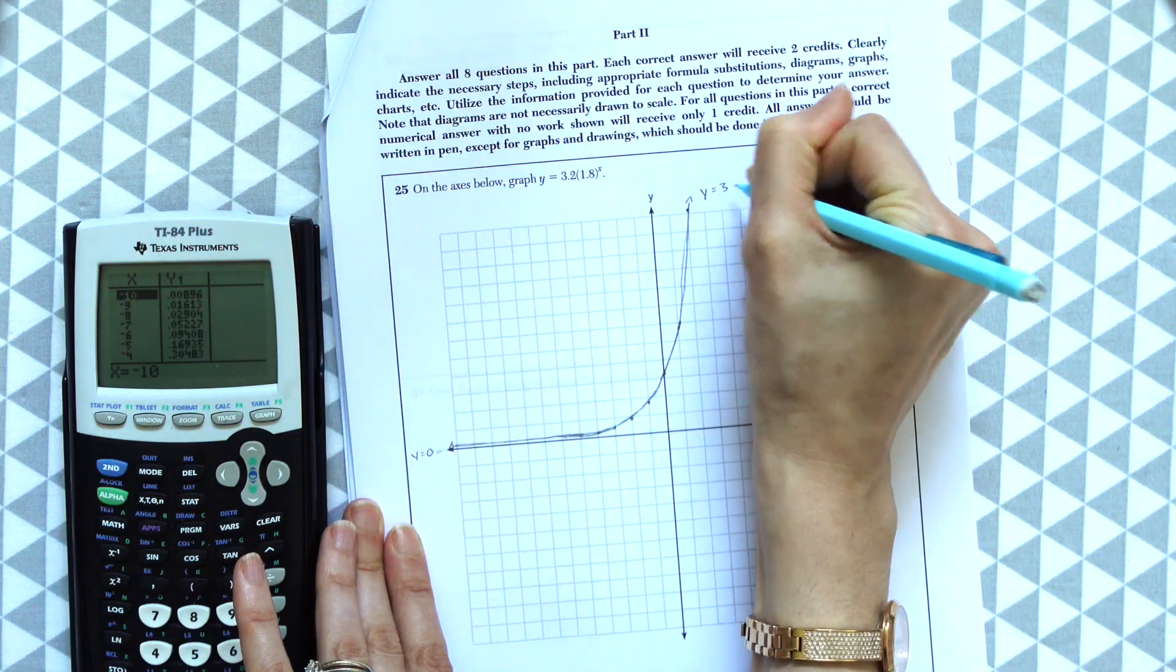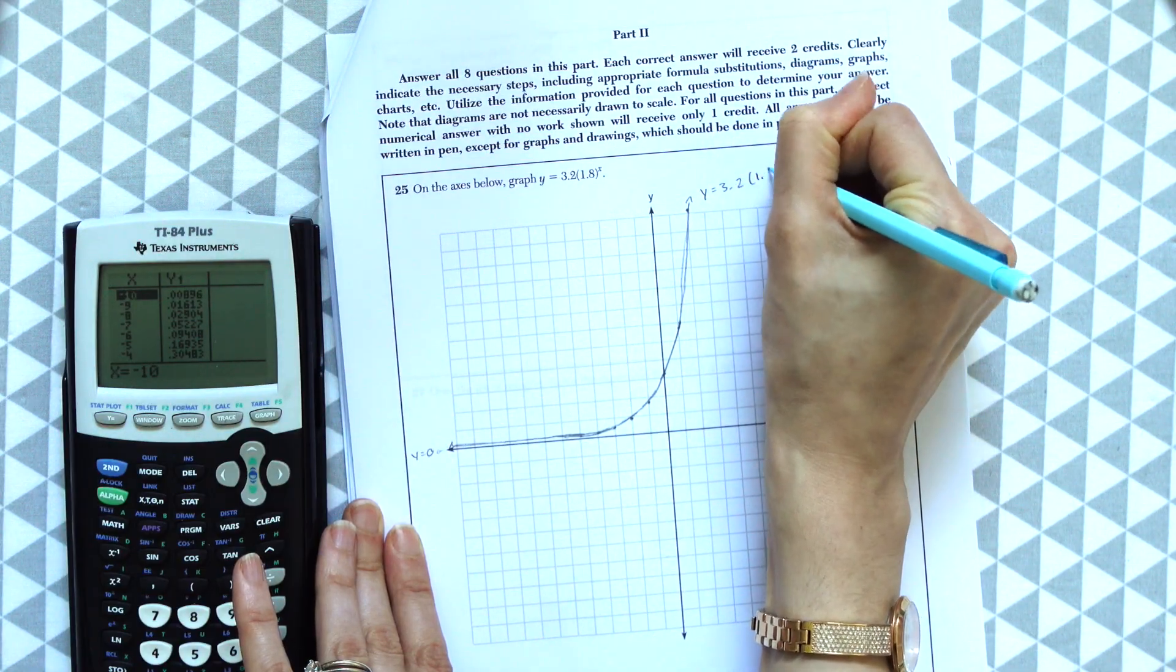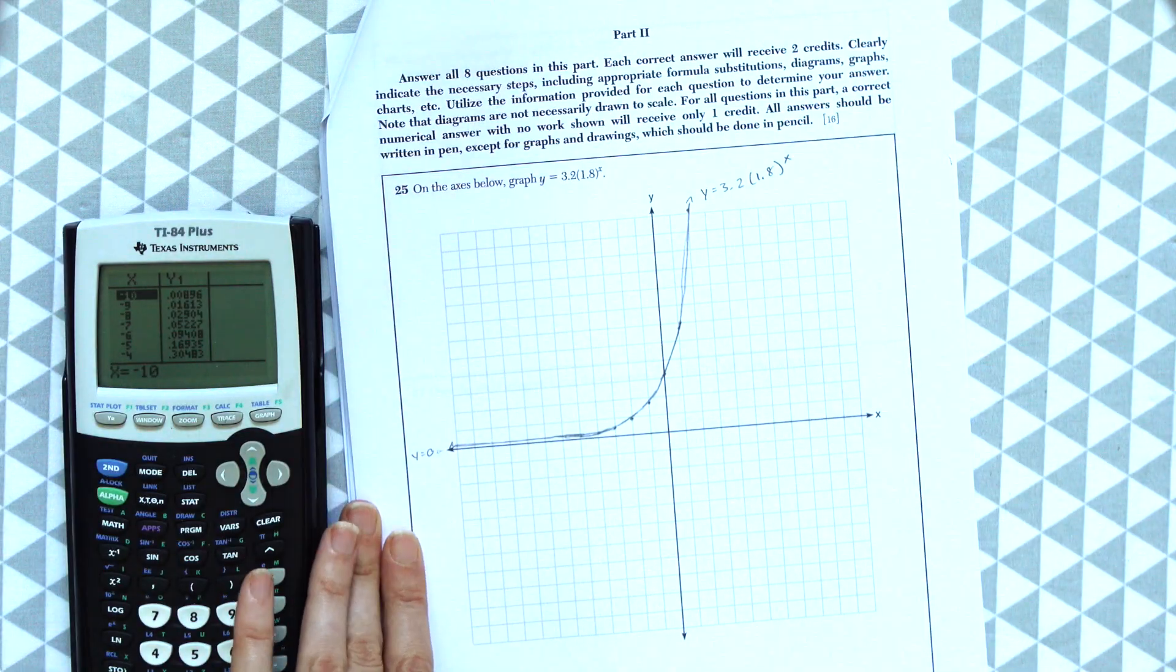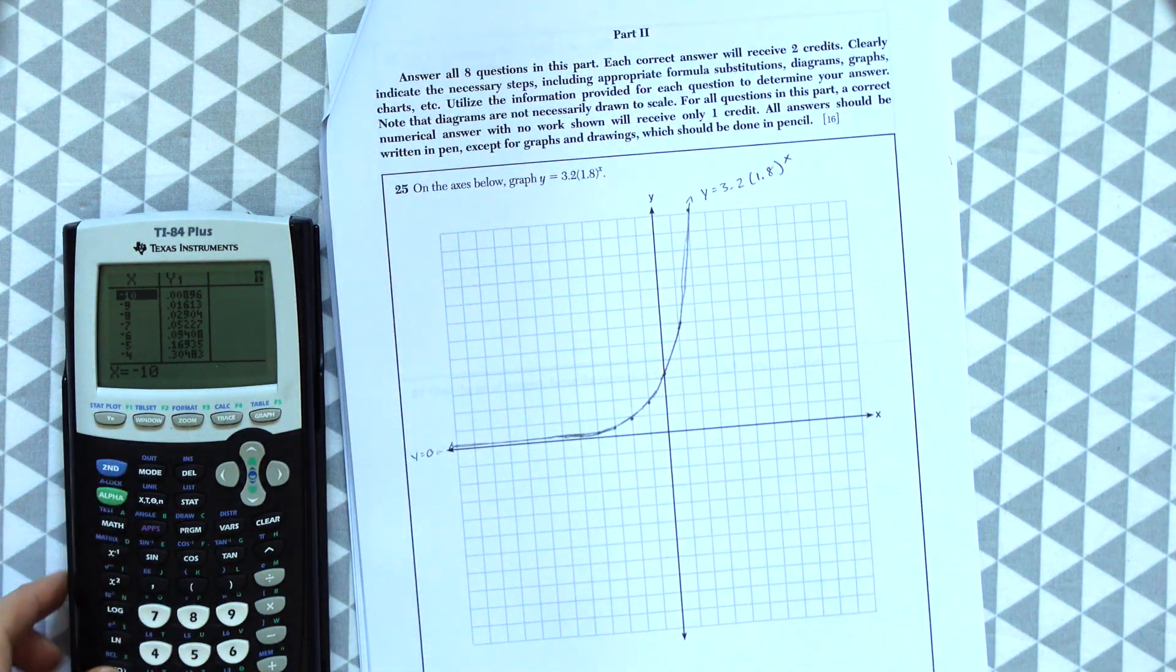And then just labeling the graph: y equals 3.2 times 1.8 to the x. And that's our answer. That's all we have to do for question 25.